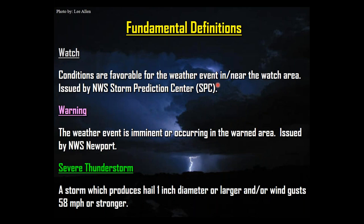Most of our warnings around here are for severe thunderstorms. By definition, a severe thunderstorm produces hail of one inch diameter or larger, or wind gusts of 58 miles per hour or stronger. Those values are based on when hail size and wind speeds start causing damage, determined by surveys and studies. Severe thunderstorms can also produce tornadoes, at which point we issue a tornado warning. One thing not on the list is lightning — all thunderstorms have lightning, but lightning alone does not make a severe thunderstorm, though it is certainly dangerous in all cases.